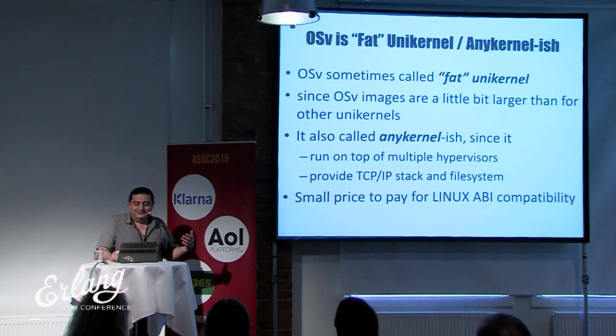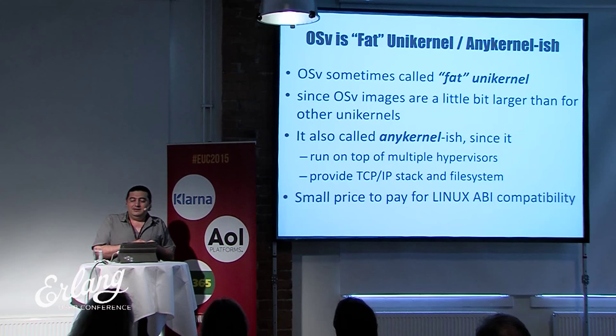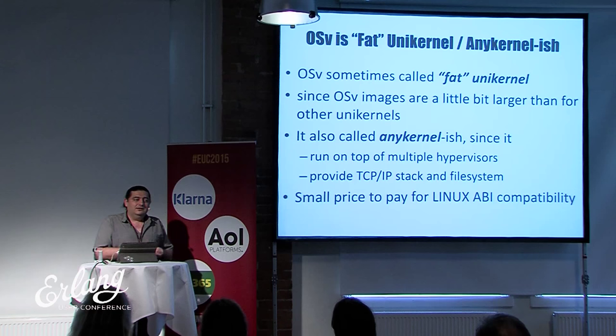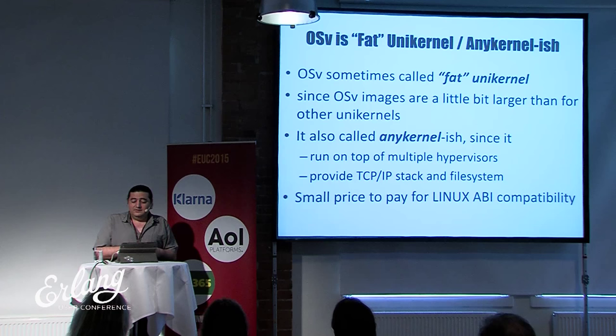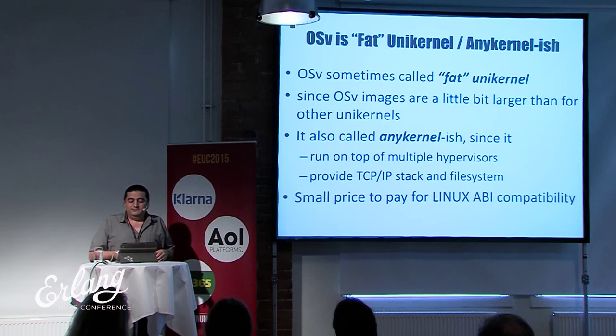As a payoff for being larger and slightly slower to boot, OSV can run on top of multiple hypervisors. MirageOS only supports Xen, but OSV can run on Xen, KVM, VirtualBox, and all VMware hypervisors. It provides a user-space TCP/IP stack and ZFS file system, as well as almost full POSIX API and Linux ABI compatibility. In my opinion, that's a very small price to pay for an easier life.